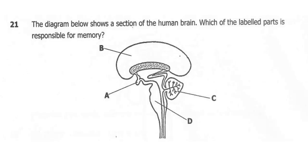Question 21. The diagram below shows a section of the human brain. Which of the labelled parts is responsible for memory? The correct answer here is B, which is the cerebrum. The cerebrum is where we have full memory as well as intelligence. A is the pituitary gland — the master gland that produces hormones. D is the medulla oblongata, in charge of involuntary actions like salivation and breathing. C is the cerebellum, in charge of body posture and balance.